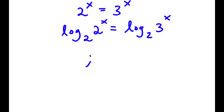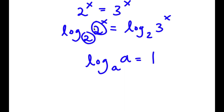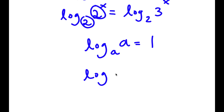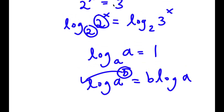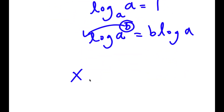Now, if I have something in the form log base a of a, this is simply equal to 1. So as you see here, we have log base 2 of 2. Before I cancel these two out, if I have something in the form log base a of something to the power of b, I can move this exponent b to the front — so it's going to equal b times log a. In this case, I have x as my exponent, so I can move this to the front. So now I have x times log base 2 of 2 is equal to...